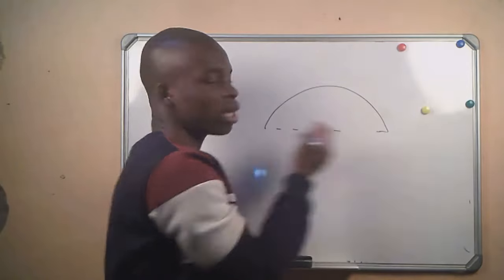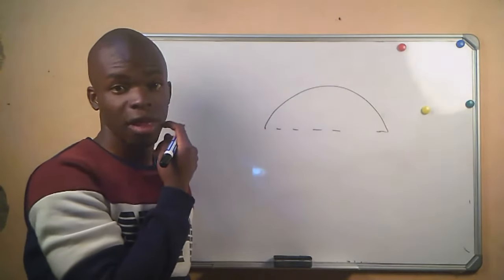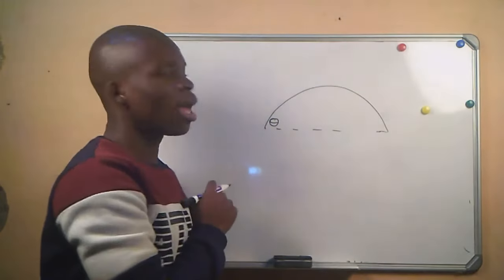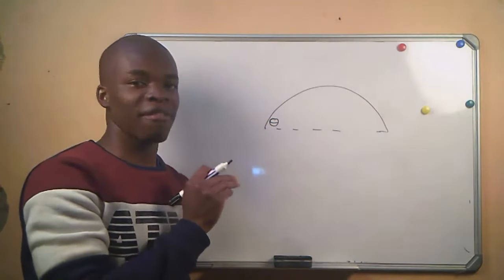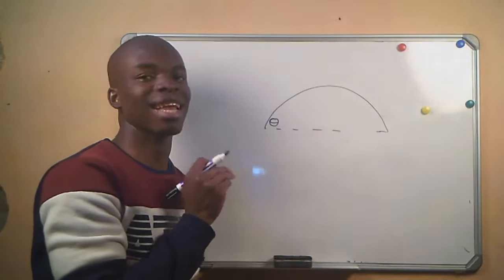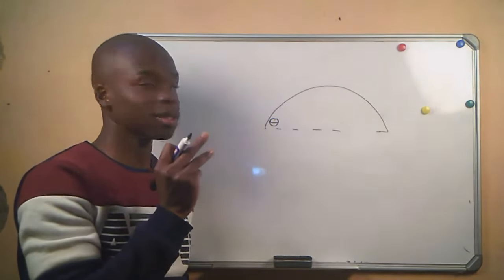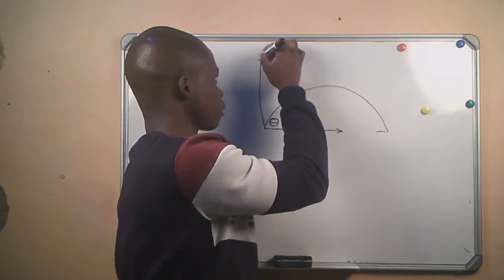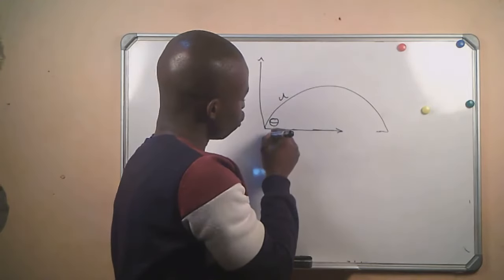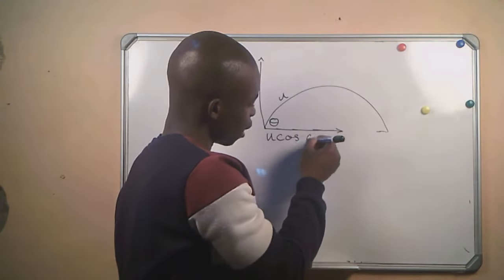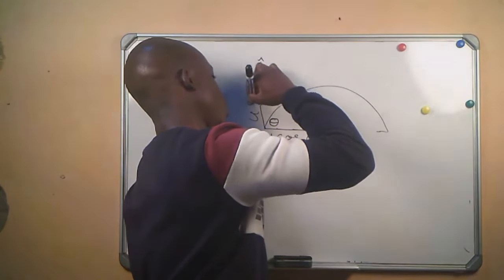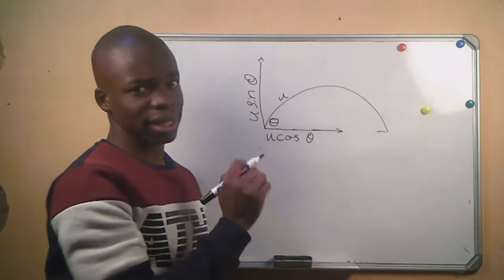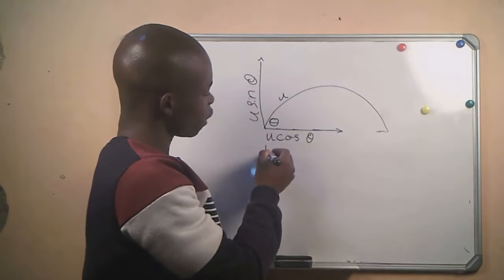An object can only travel a parabolic path if it is projected at an angle. Whenever we have a velocity projected at an angle, it will develop two components: the horizontal component and the vertical component. So if the initial velocity is u, the horizontal component will be u cos θ and the vertical component will be u sin θ. The horizontal component is responsible for the displacement of the object being projected.